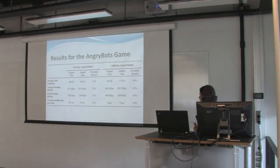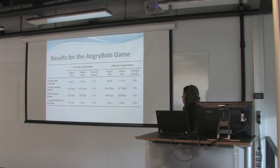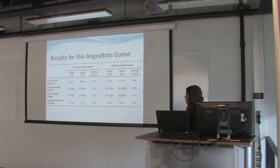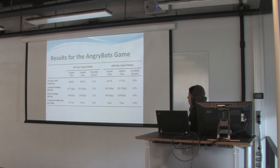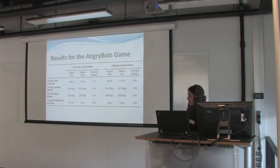Here are the results for the Angry Bots game. We have a 2.2% decrease in average coded frame size for the CRF rate control method, and an 8% decrease for ABR. For average encoding time per frame, we have a 2.4% decrease for CRF and a 6.9% decrease for the ABR rate control method.